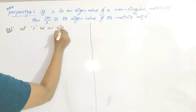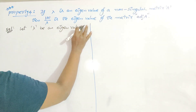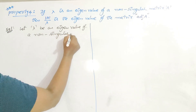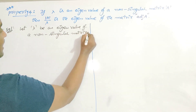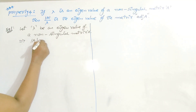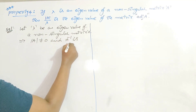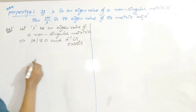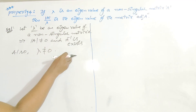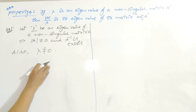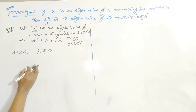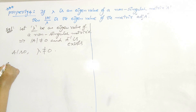Let lambda be an eigenvalue of a non-singular matrix A. What is meant by a non-singular matrix? Its determinant is not equal to zero, and A inverse exists finitely. Also, the eigenvalue should be non-zero. If A is a singular matrix then at least one eigenvalue is zero. If A is a non-singular matrix, then none of the eigenvalues are zero — all are non-zero eigenvalues.